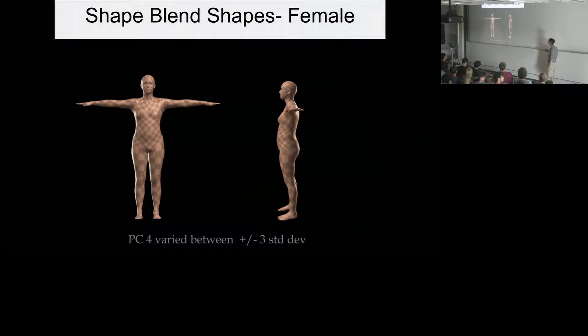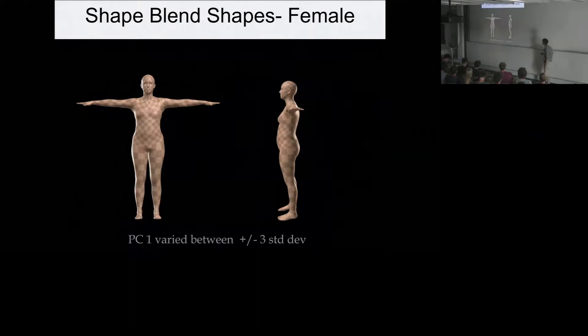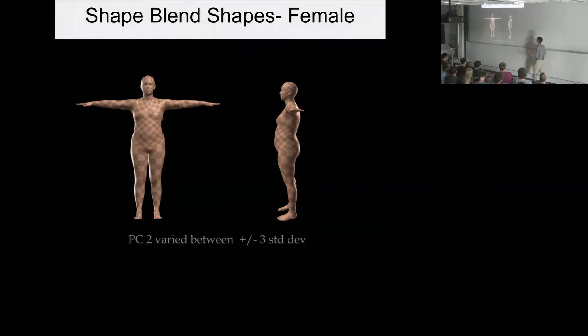Here are examples of the first few principal components of female body shape. The pose should not be changing — we've factored that out — so these should only be shape variations: height, weight, and various other body proportions. It does a reasonable job of capturing the shape of any body.